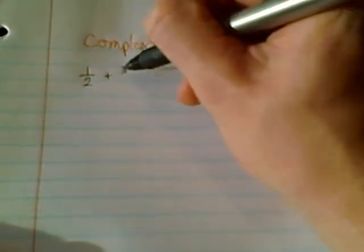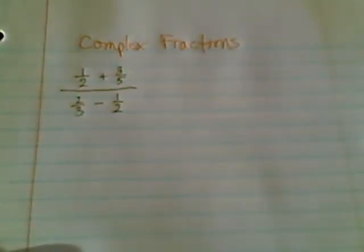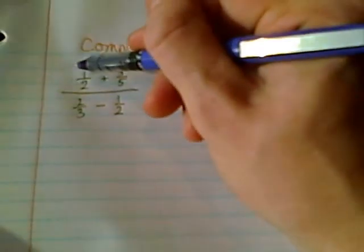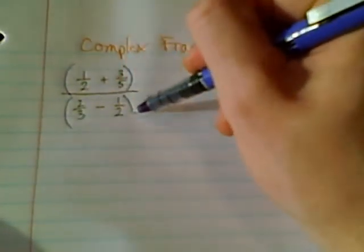So let's start with a couple of numerical examples. Let's go for one-half plus three-fifths over two-thirds minus one-half. One thing that we know about all fractions is that even if we don't see it, there is implied parentheses around the entire numerator and around the entire denominator.